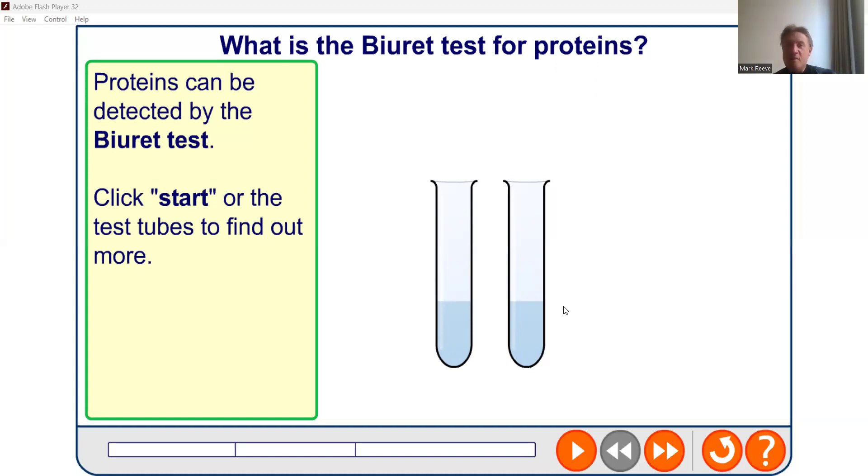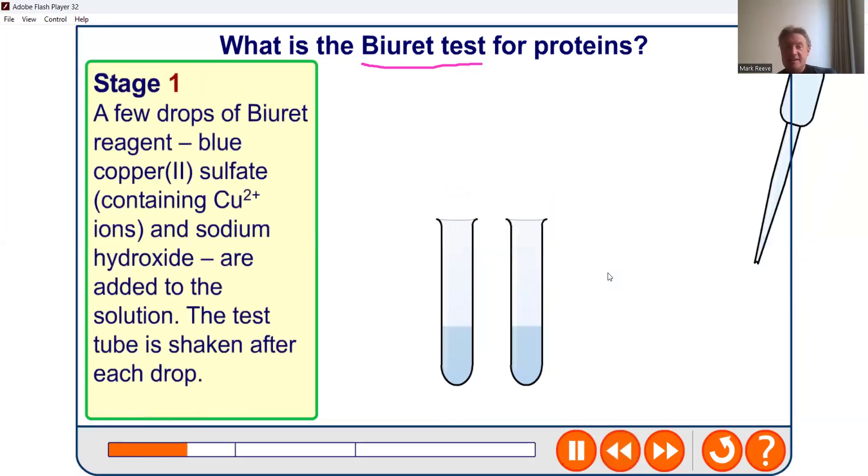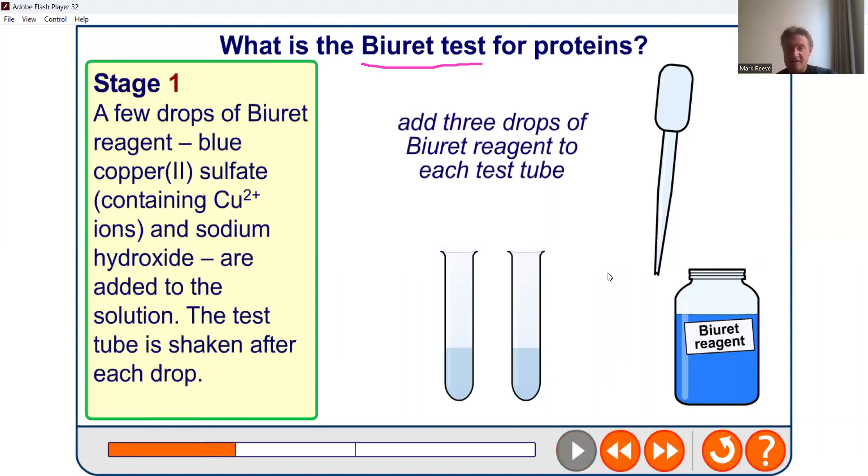Today we're going to look at the Biuret test for proteins. So we're going to carry out a test for proteins using something called Biuret reagent. Now Biuret reagent basically contains copper two plus ions, copper two sulfate, and either sodium or potassium hydroxide.